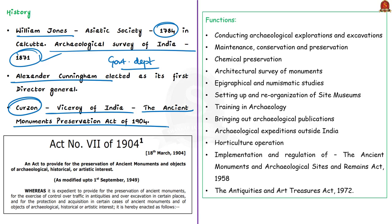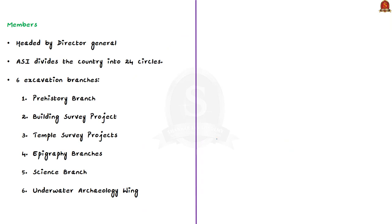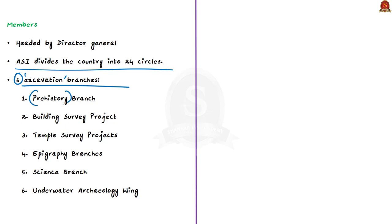The important functions of ASI include conducting archaeological explorations and excavations, maintenance, conservation and preservation of protected monuments, archaeological sites and remains of national importance, chemical preservation of monuments and antiquarian remains, archaeological expeditions outside India, and horticulture operations in and around ancient monuments and sites. ASI is headed by a Director General assisted by Additional Director Generals, Joint Director Generals, and other Directors. For administrative convenience, ASI divides the entire nation into more than 20 circles, each headed by a Superintending Archaeologist. There are also six excavation branches for specialized research: prehistory branch, building survey project, temple survey projects, epigraphy branches, science branch, and underwater archaeology wing.